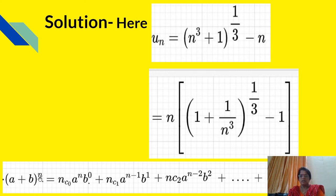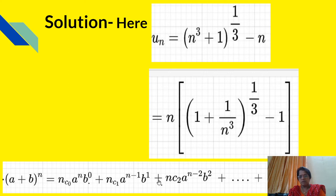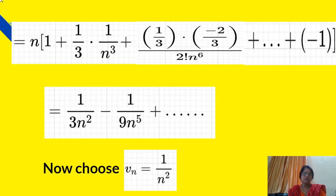The binomial theorem states that (a + b)^n = C(n,0)·a^n·b⁰ + C(n,1)·a^(n−1)·b + C(n,2)·a^(n−2)·b² + ... + C(n,n)·b^n. Here a = 1 and b = 1/n³, so we get n·[1 + (1/3)·(1/n³) + (1/3)(−2/3)/(2!)·(1/n⁶) + ... − 1].